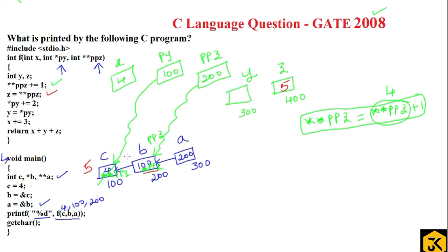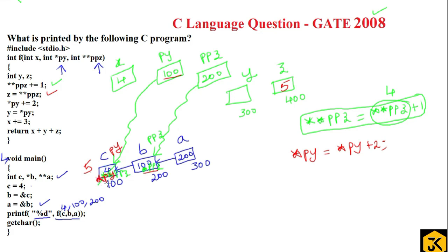For `*py += 2`: py is 100, so *py gives the current value of c which is 5. 5 + 2 = 7, and that is updated back into memory location 100. So c's value is now 7.